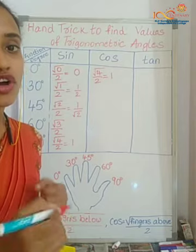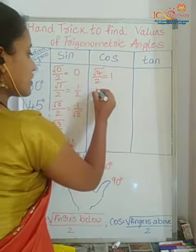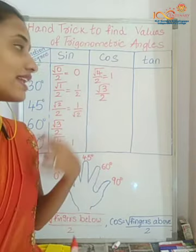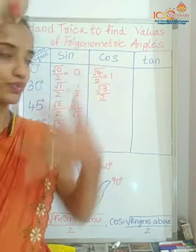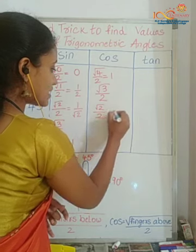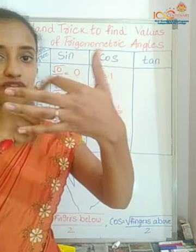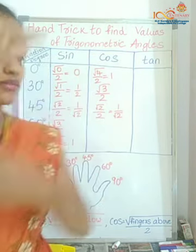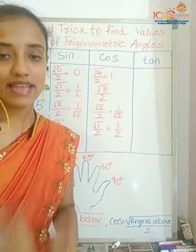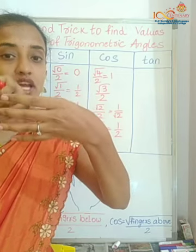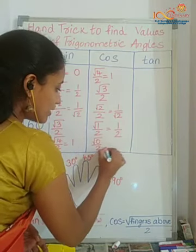Now let's find cos 30. Fold the 30-degree finger. How many fingers above? One, two, three. So it is root three by two. For cos 45, fold the middle finger. How many fingers above? One and two. So it is root two by two, which simplifies to one by root two. For cos 60, fold that finger and count fingers above — just one, giving root one by two, which equals one-half. For cos 90, fold the thumb. Are there any fingers above? No. So it is root zero by two, which equals zero.